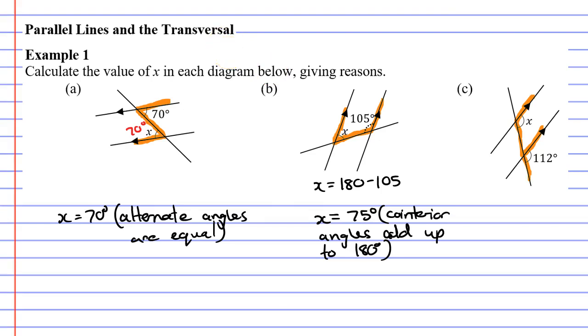So, in this one, x equals 112 degrees. And for our reason, we're going to write it in brackets below. We're going to say that they are corresponding angles. We're going to say that corresponding angles are equal.